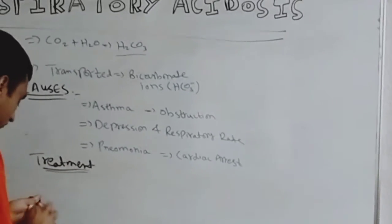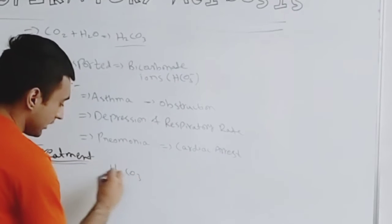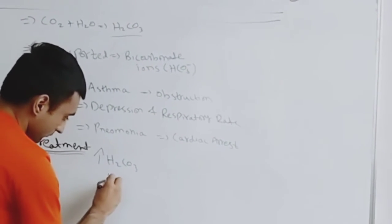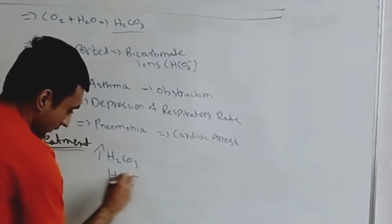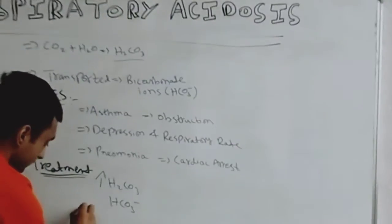We know that the concentration of carbonic acid in the blood is elevated and the bicarbonate ions are less in this case of respiratory acidosis. So what do the kidneys do in this case?